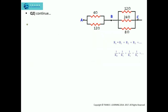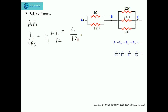The first step is to find the equivalent resistance of these two parallel combinations. First, I will calculate the equivalent resistance between AB — let it be RP1. So it will be 1/4 plus 1/12, which comes out to 4/12, that is 1/3. Taking the reciprocal, it comes out to be 3 ohm.